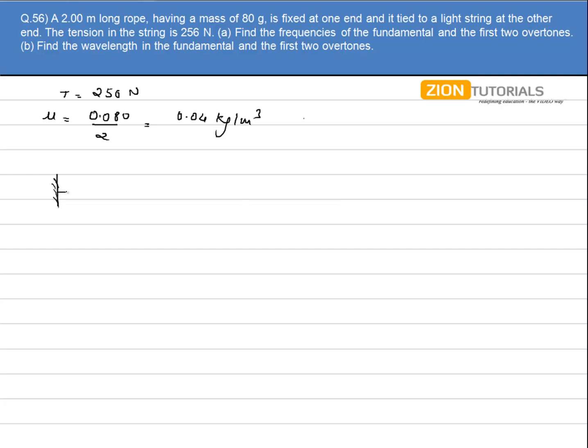So let's say this is my string vibration and this is the fundamental mode of vibration. This will be my first overtone and this will be the second overtone.